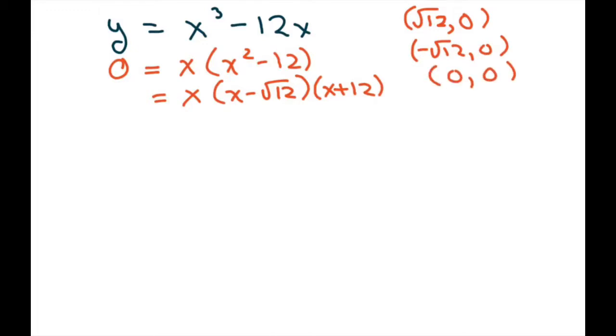Now our y-intercept is where x is 0, and it's very clear. If you plug in 0, you get 0. Any time you have an x-intercept at 0, 0, you also have a y-intercept. So this is both our x and y-intercepts. All right. So we got that part.